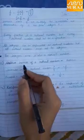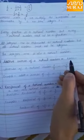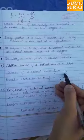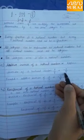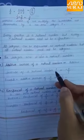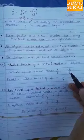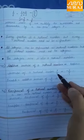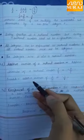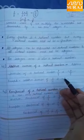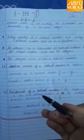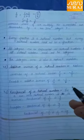Additive inverse of a rational number: The additive inverse of P upon Q is minus P upon Q. Jo additive inverse hota hai, vo rational number ka sign change karna hai. Agar negative rational number hai to positive ho jayega, aur agar positive hai to negative ho jayega. For example, additive inverse of 3 upon 4 is minus 3 upon 4, and additive inverse of minus 6 is plus 6.